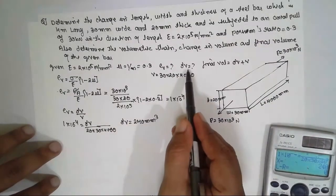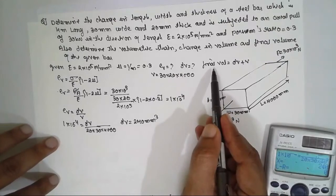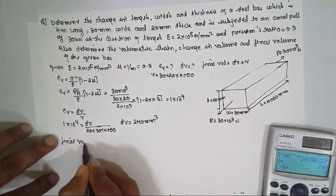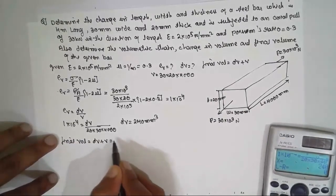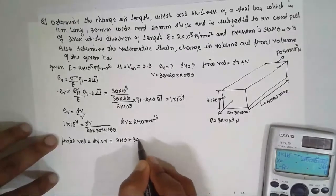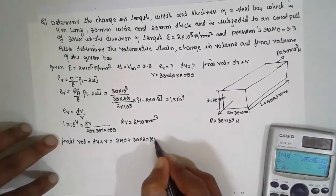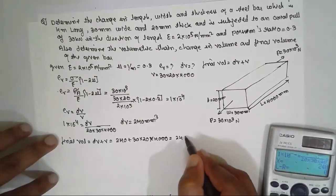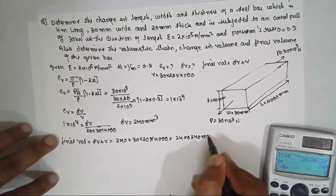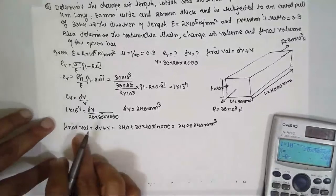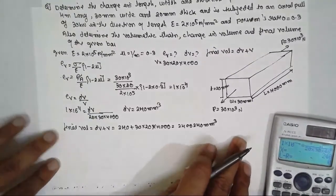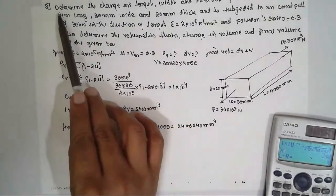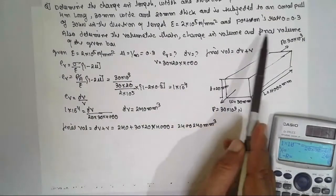We got the change in volume ΔV = 240 mm³. Now find the final volume: Final volume = ΔV + V = 240 + (30 × 20 × 4000) = 2,400,240 mm³.